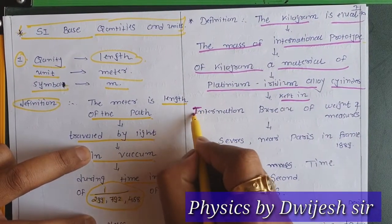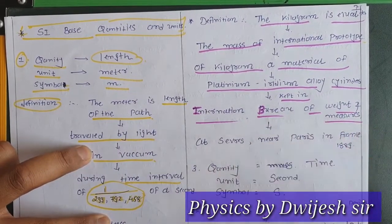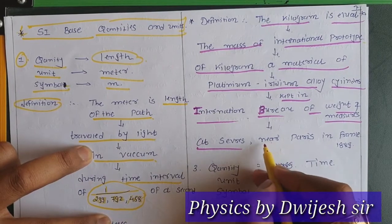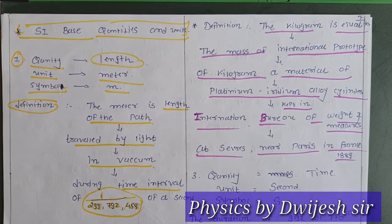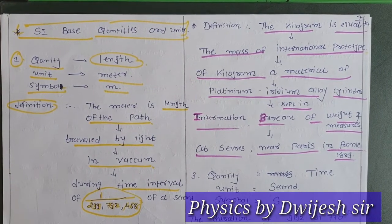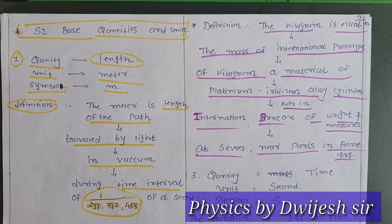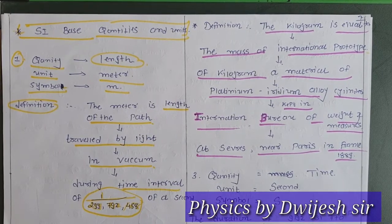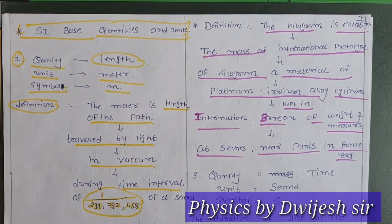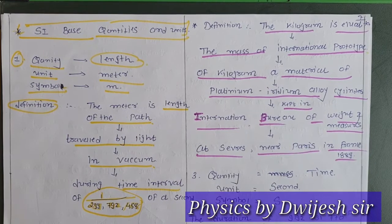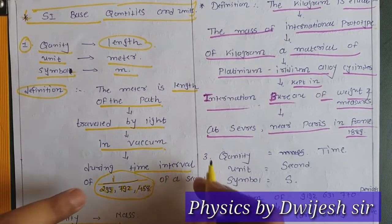This platinum-iridium alloy cylinder is kept at the International Bureau of Weights and Measures (BIPM) laboratory at Sèvres, near Paris, in France. It was established in 1889. The mass of this prototype cylinder is what is defined as one kilogram.